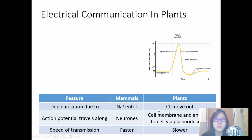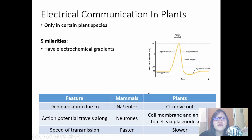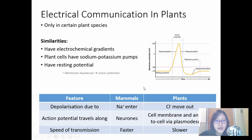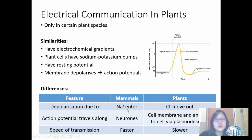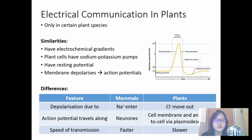We know electrical communication in mammals is through neurons, but in plants it is not, and it only occurs in certain plant species. They do share some similarities: both have electrochemical gradients, plant cells also have sodium-potassium pumps, resting potential, and action potentials. But in mammals, depolarization is due to sodium ions, whereas in plants it is mostly chloride ions moving out. Action potentials travel along neurons in mammals, but in plants there are no neurons — it's via cell membrane and cell-to-cell signaling via plasmodesmata. The speed of transmission is faster in mammals and much slower in plants.